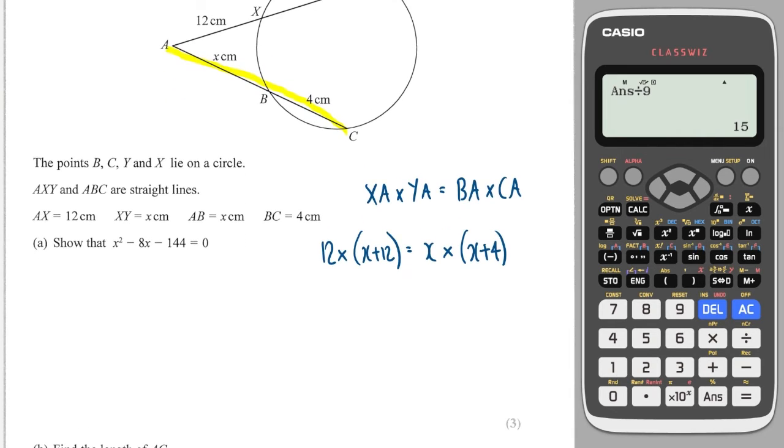Okay, so multiplying out is going to give me 12X plus 144, and multiplying out here is going to give me X squared plus 4X. Moving everything over to the right-hand side, I'm going to get an X squared, I'm going to minus 12X from 4X to get minus 8X, and I'm going to minus 144, and I get what they asked for. Perfect.